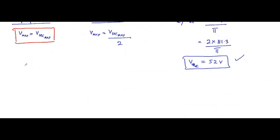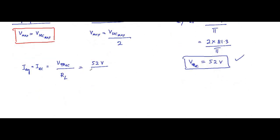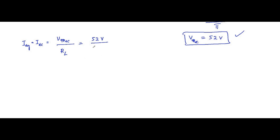Next, the average current or DC current: I_average or I_DC equals V_output_DC divided by R_L. The DC output voltage is 52 volts and R_L is 200 ohms. So I_DC equals 52 divided by 200, which is 0.26 amperes. We have now determined the average DC current and DC voltage.